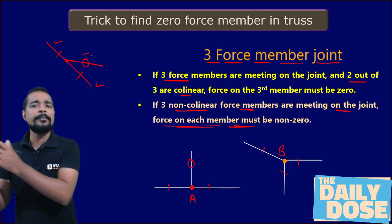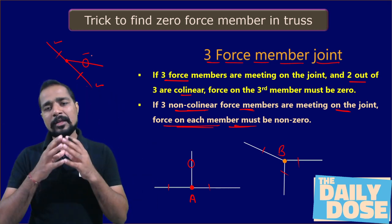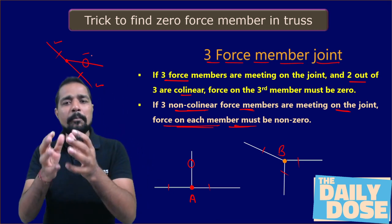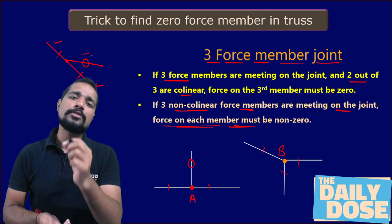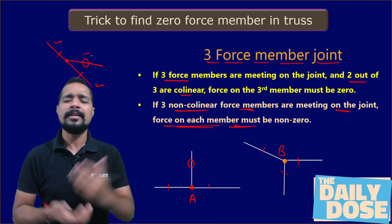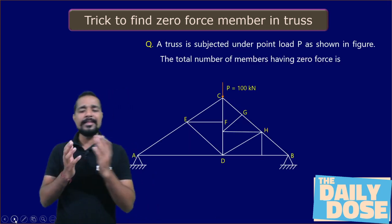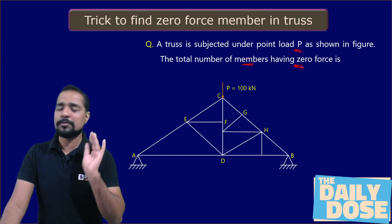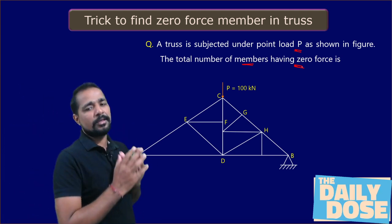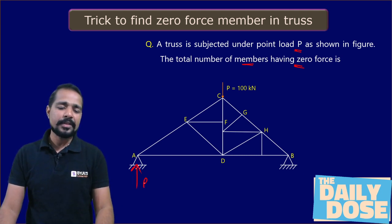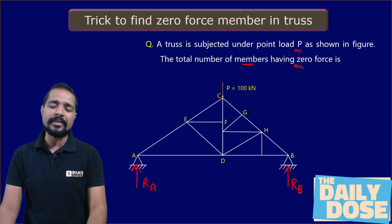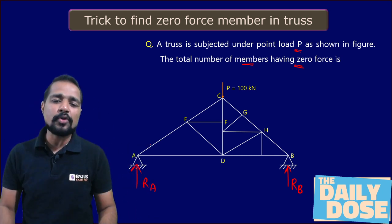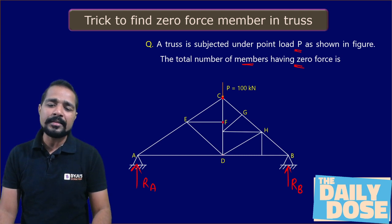When you proceed from the minimum number of force members to the maximum, joints that initially seemed complicated become easier. Let's solve a problem using all these concepts. A truss member is subjected to a point load P as shown in the figure — find the total number of members having zero force. First, locate all the forces and reactions: reaction RA at one support and reaction RB at the other. Now check whether any joint has only two force members acting.